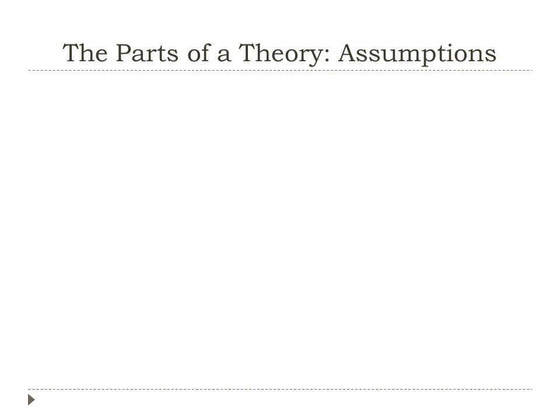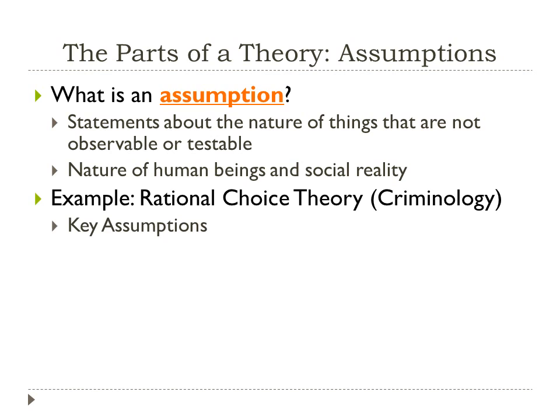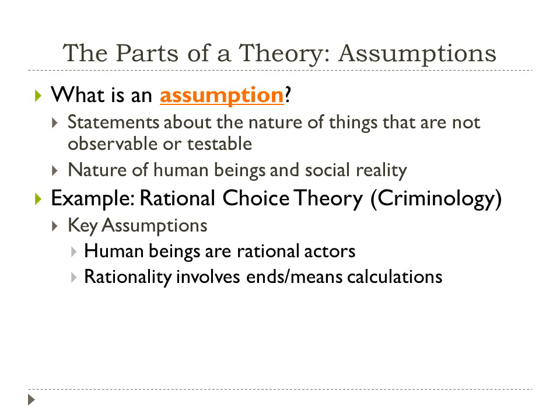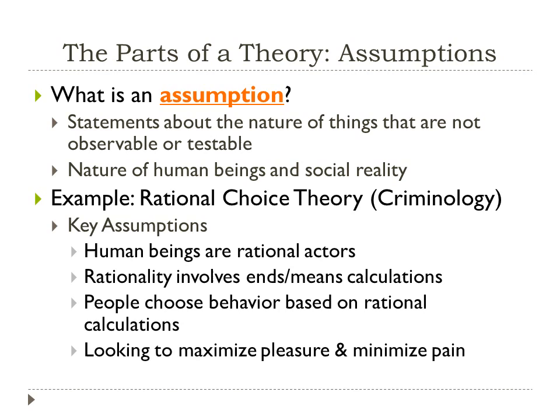Another key part of a theory beyond concepts are assumptions — statements about the nature of things that are not necessarily observable or testable. They are statements about the nature of human beings and our social reality. For example, in rational choice theory, a popular theory in criminology, the key assumptions are that human beings are rational actors, that rationality involves an ends-means calculation, and that people choose behavior based on rational calculations, looking to maximize their pleasure and minimize their pain.